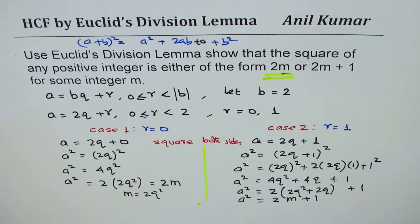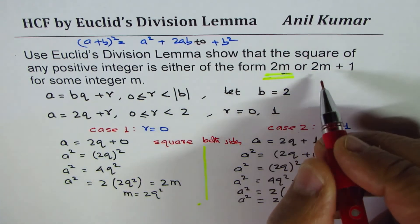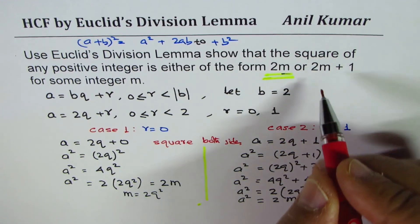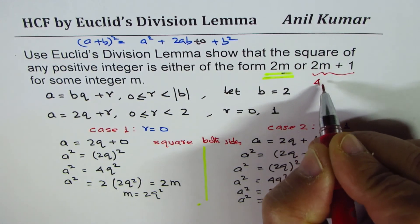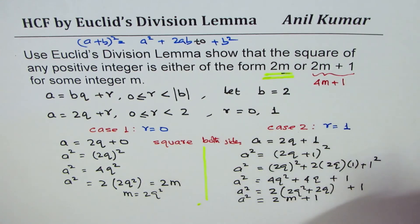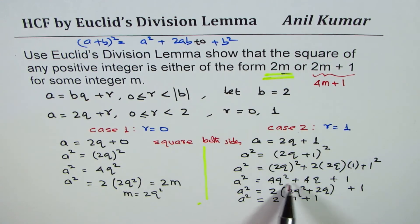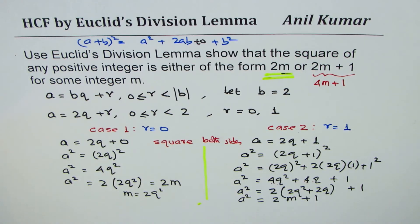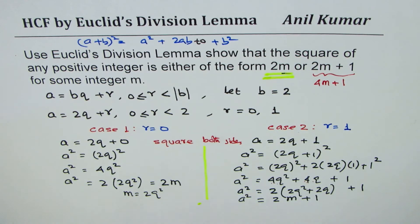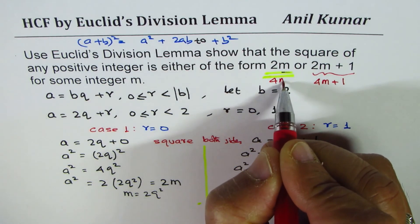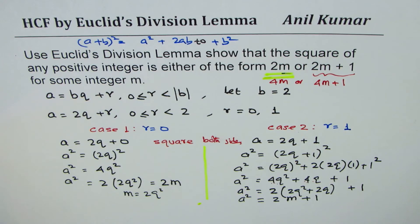That is how you could do it. Now here is a question for you on similar lines: you could actually say that this could be 4m + 1. You could have taken 4 common. So we could change the question and make it 4m or 4m + 1. We'll have to take 4 common here.